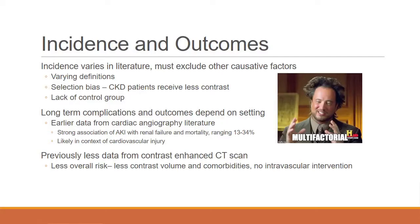Incidence and outcomes: the incidence varies in the literature because other causative factors must be excluded. A nephrologist's favorite word is 'multifactorial' — it can be very challenging to determine whether it was hypotension or contrast that caused renal failure. There's also selection bias, since CKD patients in general don't receive contrast, and many studies lack a control group. Long-term complications depend on the setting. Cardiac literature showed a strong association of AKI with renal failure and even mortality ranging from 13 to 34 percent per year — significant, but again in the setting of many confounding factors. More recent studies focus on outpatient CT scans in patients with CKD.